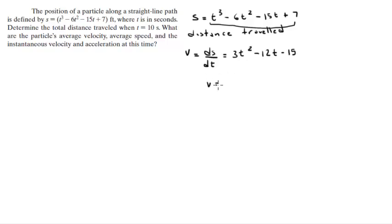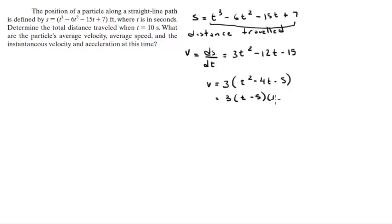Set the velocity equation equal to 0. It's easier when you factorize: factor out the 3 to get 3(t² - 4t - 5), then factorize further to get 3(t - 5)(t + 1). Setting this equal to 0, you find that t = 5 and t = 1.